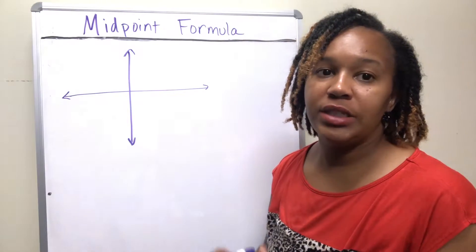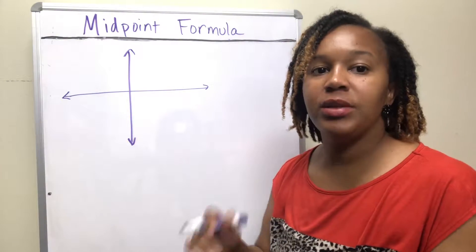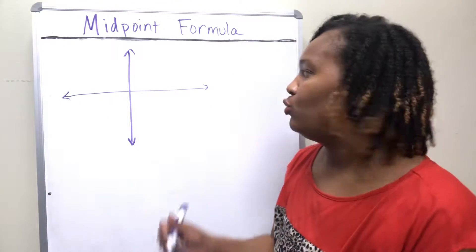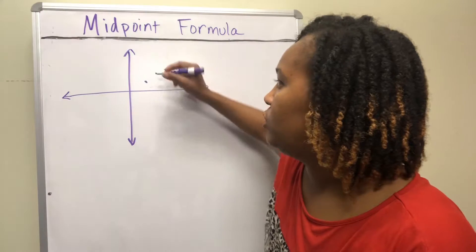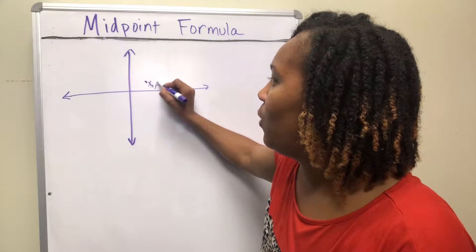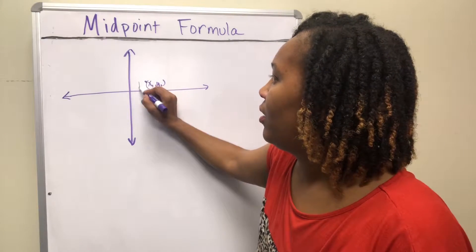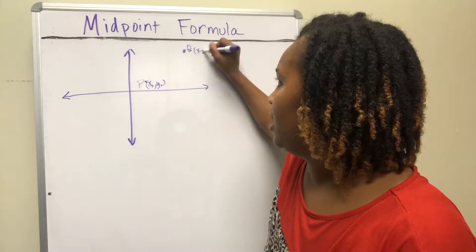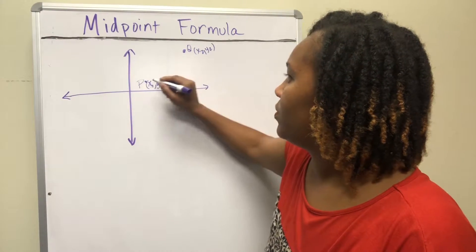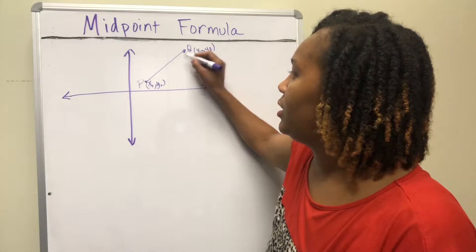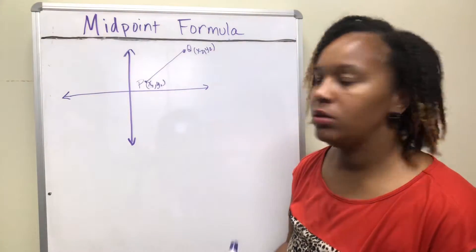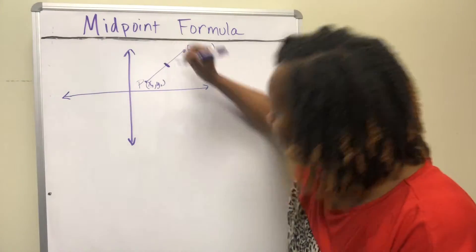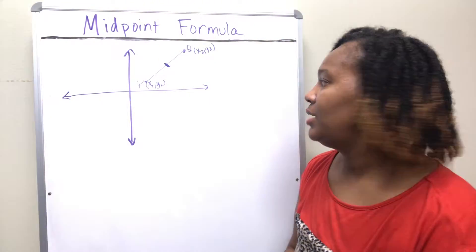Another measure of interest between two points is the midpoint. That's the point that's directly in the middle of a line segment that connects two points. So, say we have two generic points: point P at (x1, y1) and point Q at (x2, y2). If I draw a line segment between those two points, the midpoint is the point smack in the middle of that line segment.